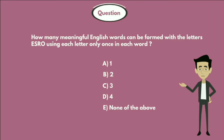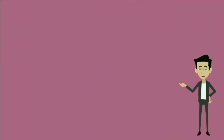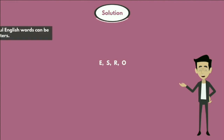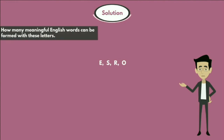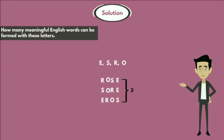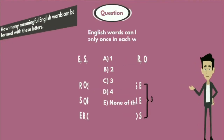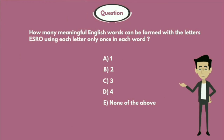Let's see the solution. The given letters are E, S, R, and O. The meaningful words that can be formed are ROSE, SORE, and EROS. So three meaningful English words are formed using these letters, and the answer is Option C: 3.